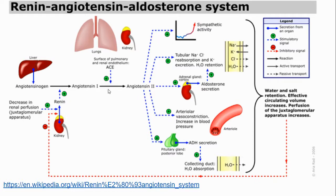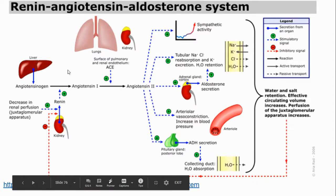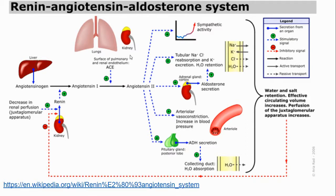A lot of blood pressure is monitored by your kidney, which through this complex series of hormones can increase blood pressure. The number one prescribed drugs in the United States are blood pressure medications. Most blood pressure medications work as inhibitors to one of these steps — you can take ACE inhibitors or water pills so you pee more. Most drugs related to hypertension focus on this renin-angiotensin-aldosterone system.